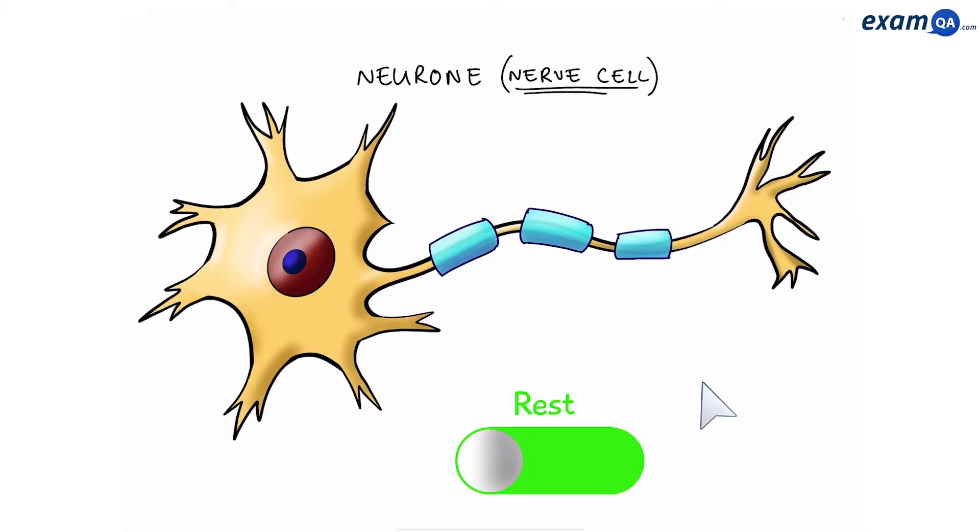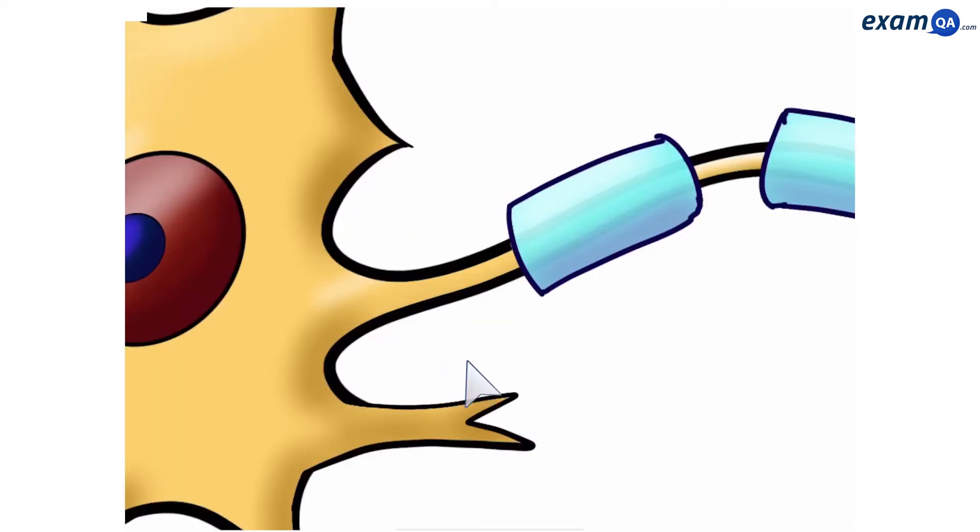Now a neuron can be at rest, which means it's not firing any action potentials. Or it can be firing action potentials. And what takes it from rest to firing, and vice versa, is to do with charges moving in and out of the neuron. So let's zoom in here and see exactly what happens during an action potential.